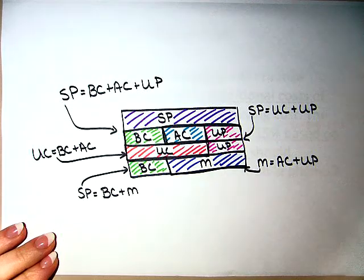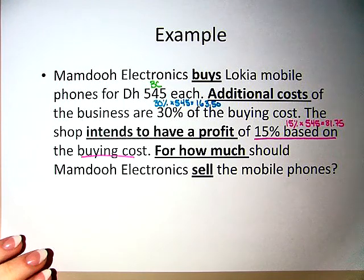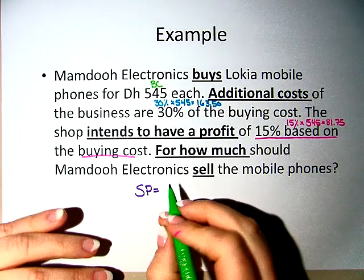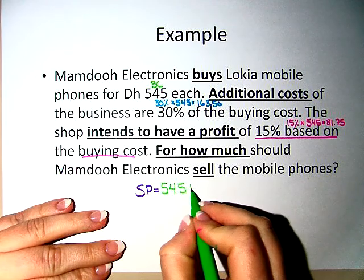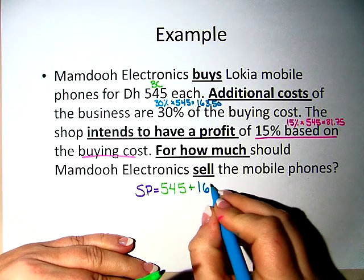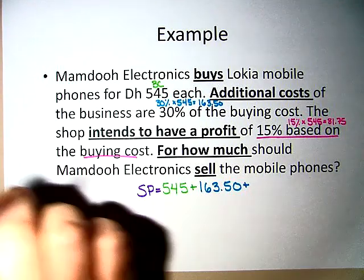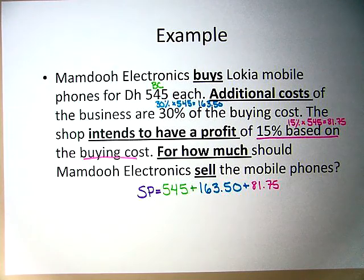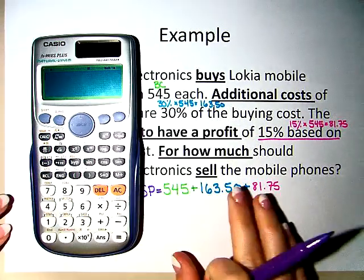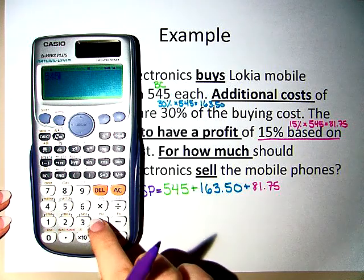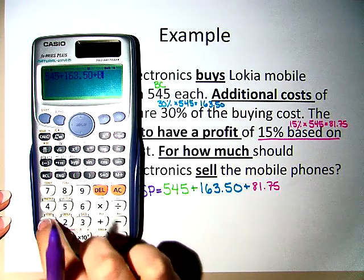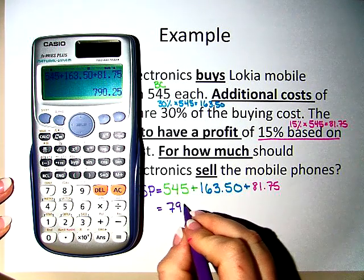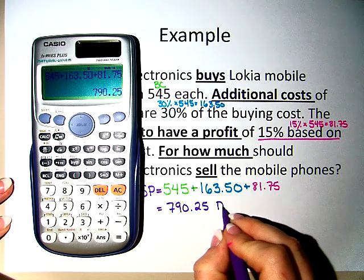We've got all three of these components in the problem. The selling price will be the buying cost, 545, plus the additional cost, 163.50, plus the unit profit, 81.75. So that would mean that my selling price is 545 plus 163.50 plus 81.75, or 790 dirhams and 25 fils.